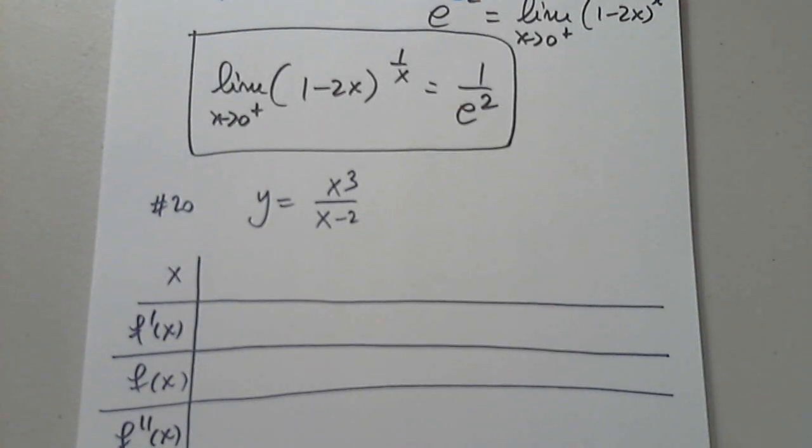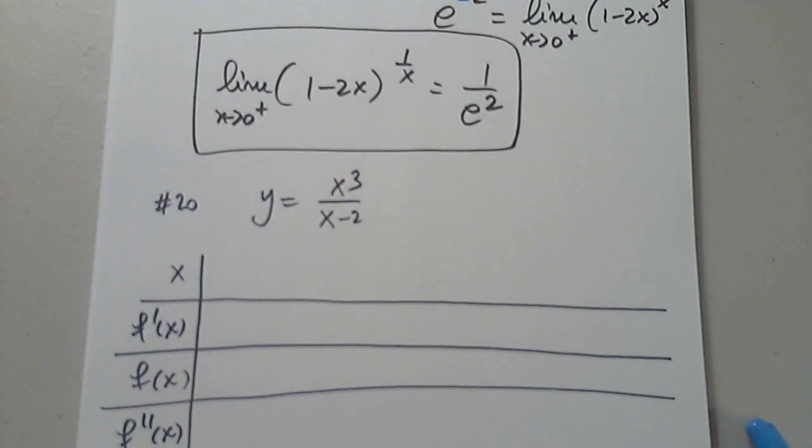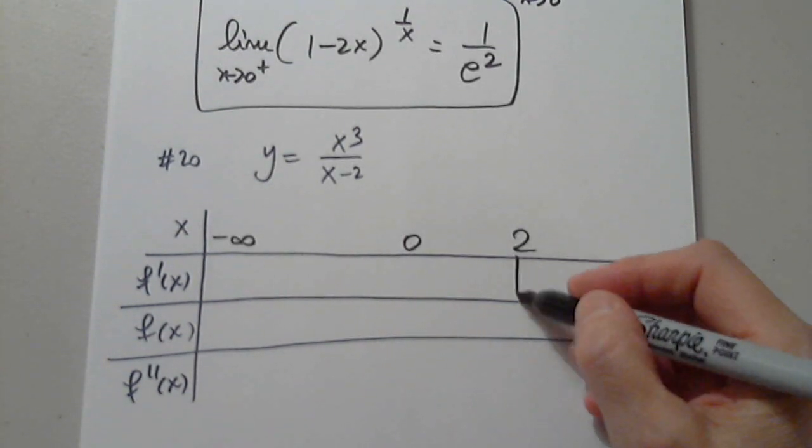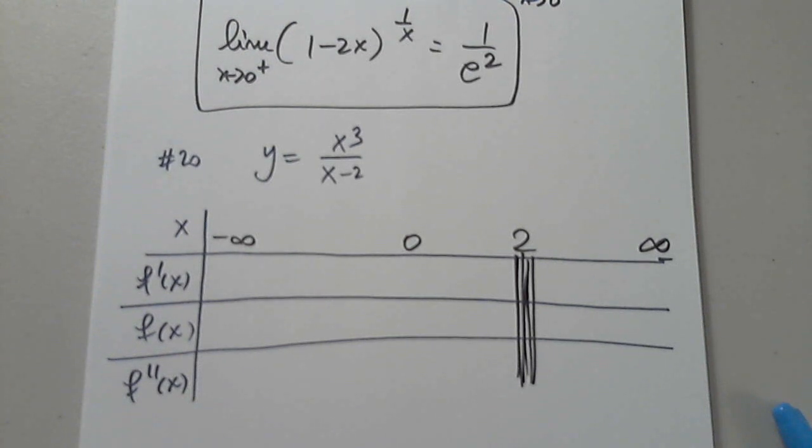So we're looking at this function. It's a rational function. I have to start with the domain. Every time I graph, every time I start the table, I have to put the domain up here first. That's my starting point. Can anyone give us a domain of this function? X does not equal two. That's it. Negative infinity to two, two to infinity. If the function is not defined at two, its derivatives cannot be defined at two. Great job. Thank you.